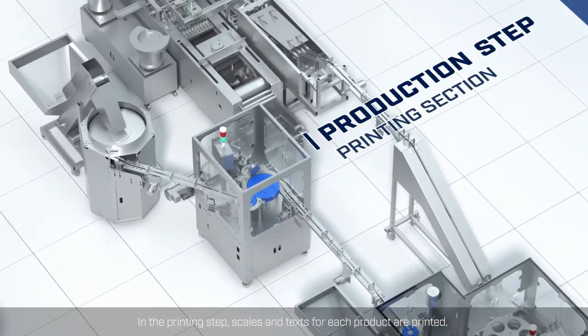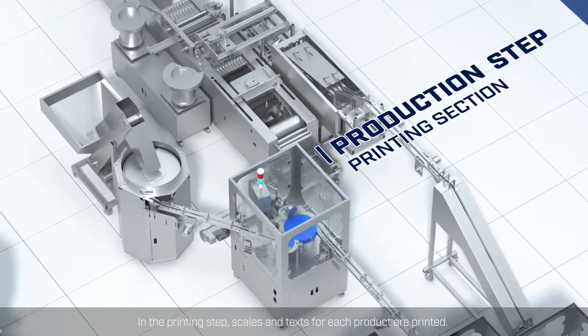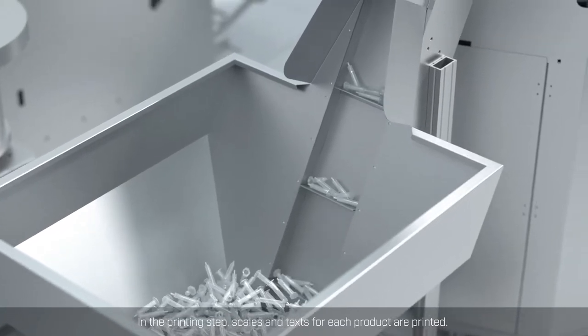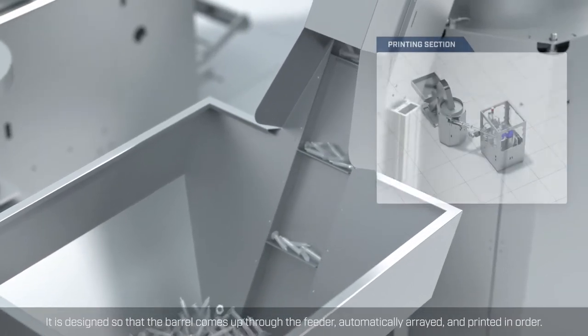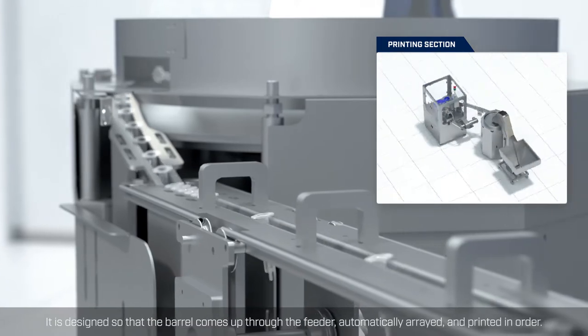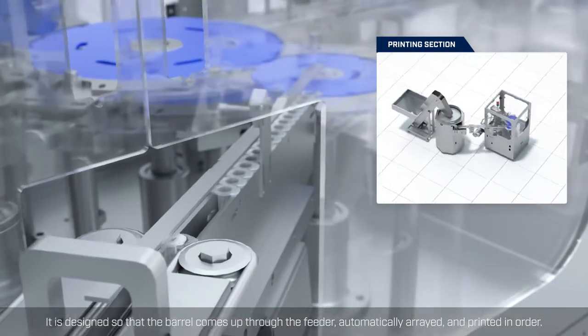In the printing step, scales and texts for each product are printed. It is designed so the barrel comes up through the feeder, automatically arrayed, and printed in order.